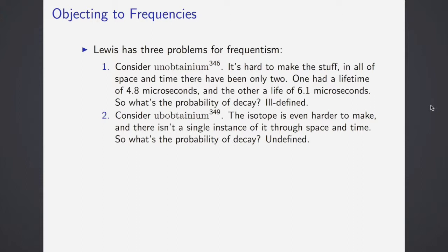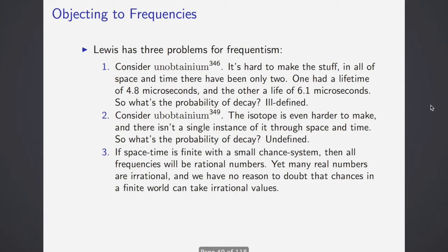Now consider unobtainium 349. This isotope is even harder to make and there hasn't been a single instance of it through space and time. What's the probability of decay? Well, there's going to be a zero in your denominator somewhere. This is totally undefined, yet there's probably an answer in principle, it's just not given by frequency. Finally, this is what I think is the most interesting one. If space-time is finite with a small chance system, then all the frequencies are going to be rational numbers. Yet many real numbers are irrational and we have no reason to doubt that chances in a finite world can take irrational values.